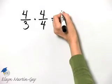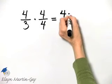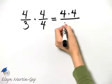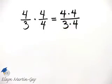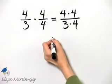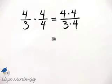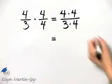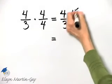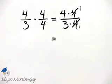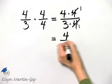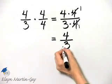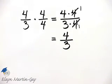If you don't happen to notice that and you write numerator times numerator over denominator times denominator, that's fine also, because we'll still see that common factor of 4, which we divide out in the numerator and denominator. And 4 times 1 is 4 over 3 times 1 is 3, so we have that the product is 4 thirds.